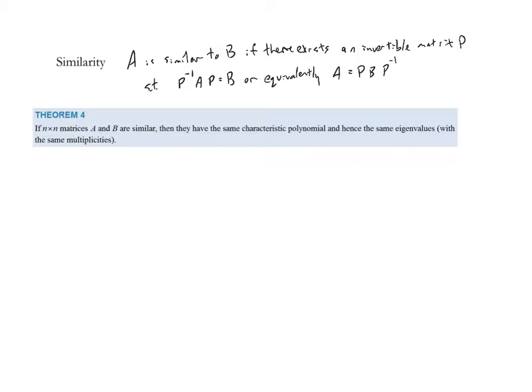How does similarity tie into eigenvalues? The theorem states: if two matrices A and B are similar, then they have the same characteristic polynomial, and hence the same eigenvalues with the same multiplicities. So if our goal is to find eigenvalues, this gives us a way to make the process more efficient — similar matrices share eigenvalues with the same multiplicities.